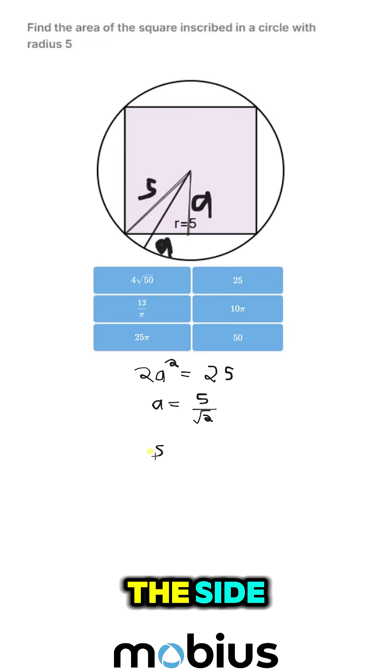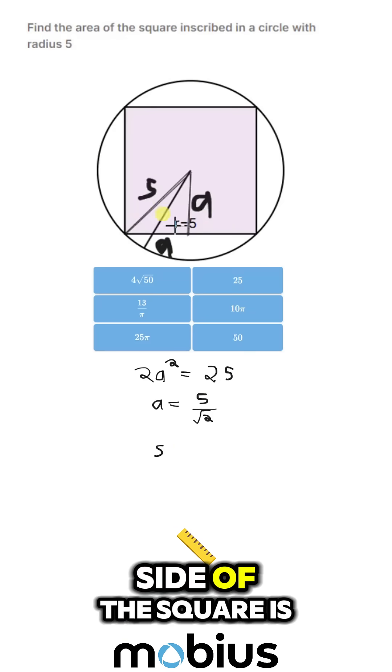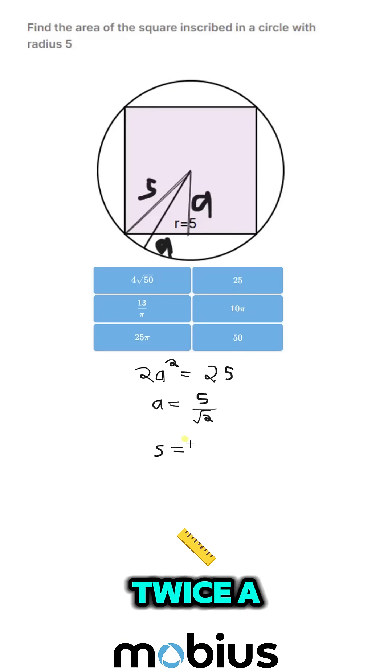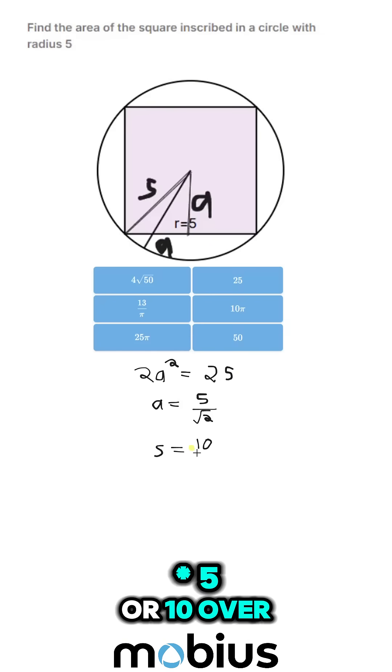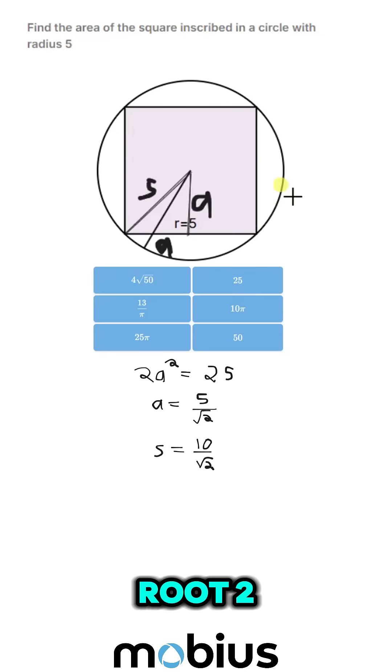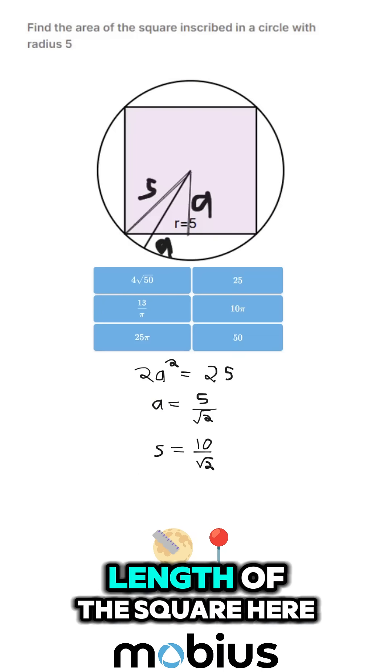But the width of the square, the length of the side of the square, is twice A. So that is 2 times 5, or 10 over root 2. That's the full side length of the square here.